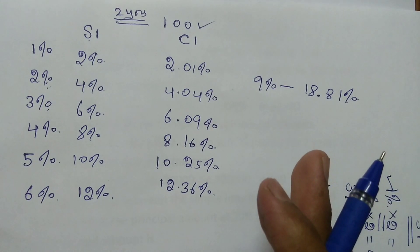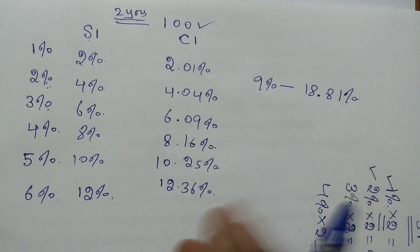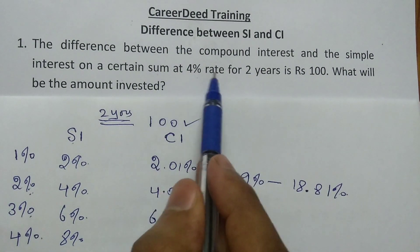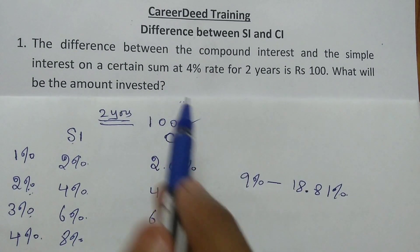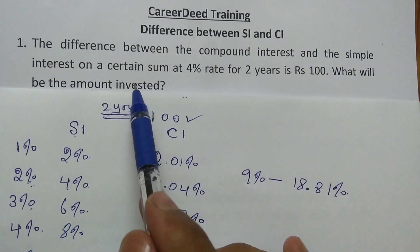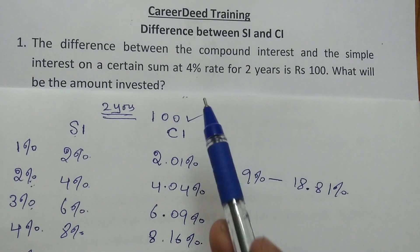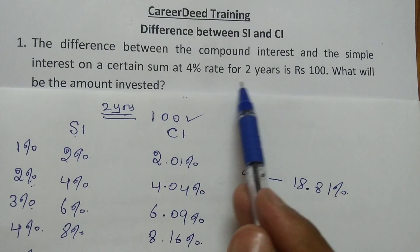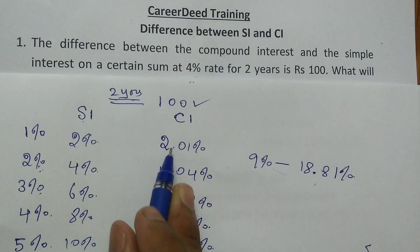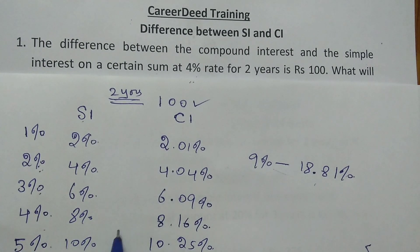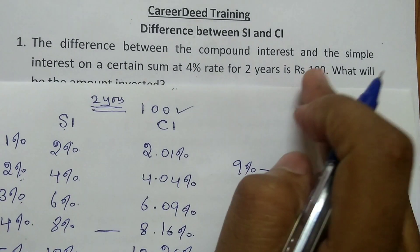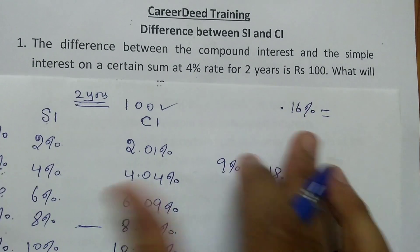If you understood this concept properly, you can easily get the answer for difference-based problems in less than 20 seconds. The question is: the difference between the compound interest and the simple interest on a certain sum at 4% for 2 years is Rs. 100. What is the amount invested? You are investing the same amount in 2 banks at the same rate — 4% simple interest in one bank and 4% compound interest in another, for 2 years. Simple interest gives 8%, compound interest gives 8.16%, so the difference is 0.16%.